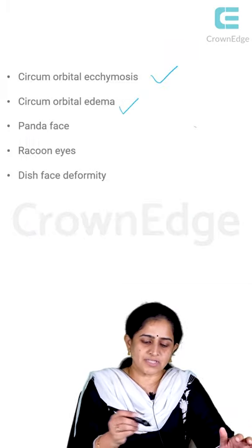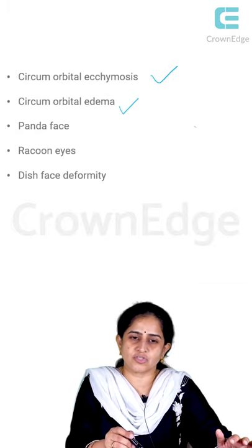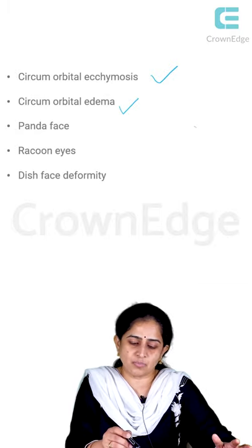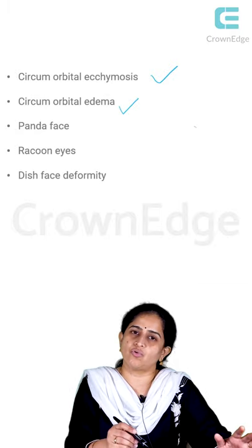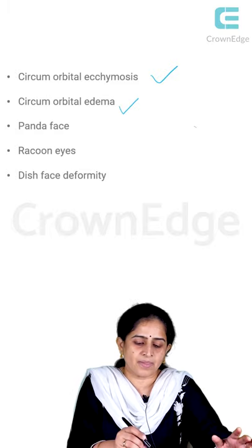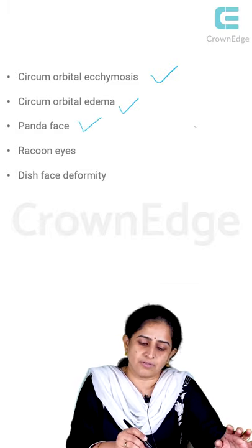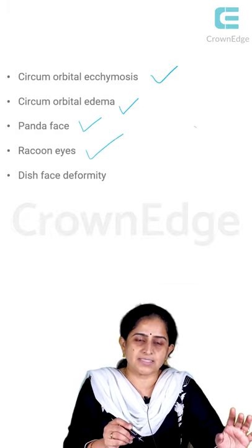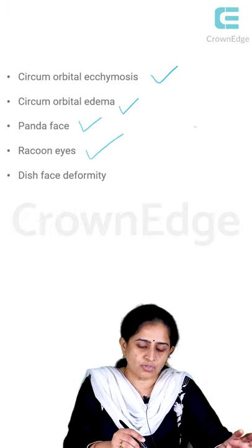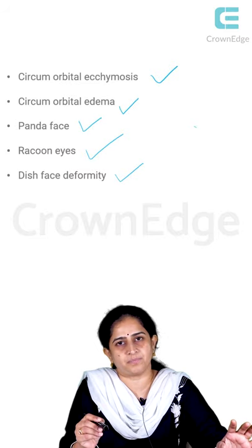These are the different signs we spoke about: circumorbital ecchymosis, circumorbital edema, the panda-face deformity, raccoon eyes, and also the dish-faced deformity.